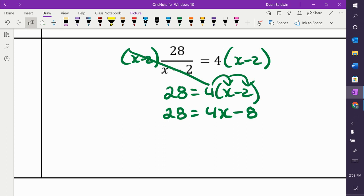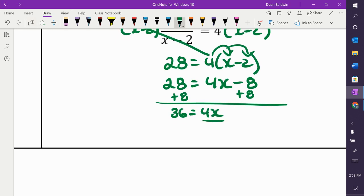Minus eight. All right. What do I do now? Plus eight. Plus eight. Which is 36. And then final step. Which is nine is equal to X.